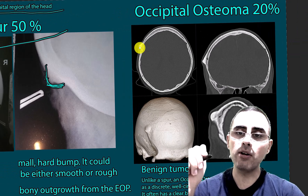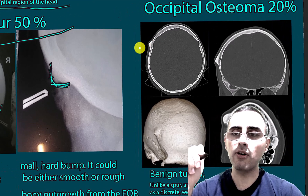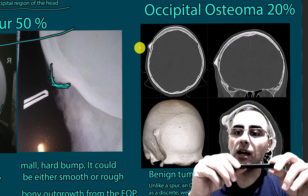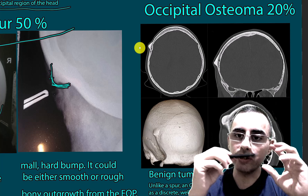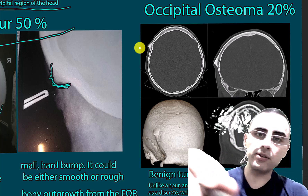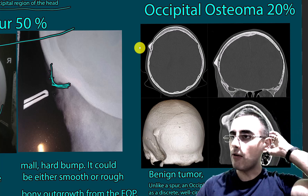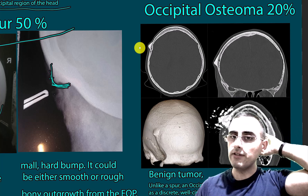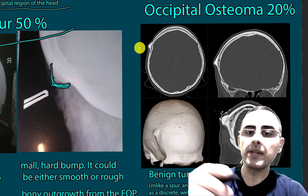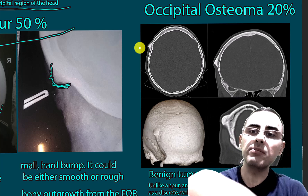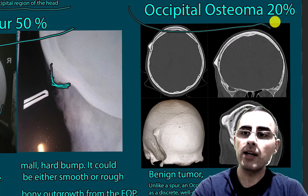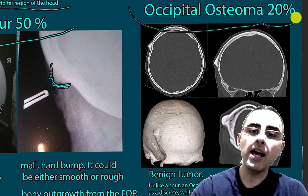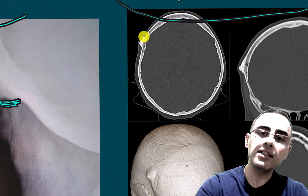Another common cause is occipital osteoma. Generally, occipital osteoma is a rare condition, but if we have bone overgrowth in the back of the head, the possibility of occipital osteoma is about 20 percent.